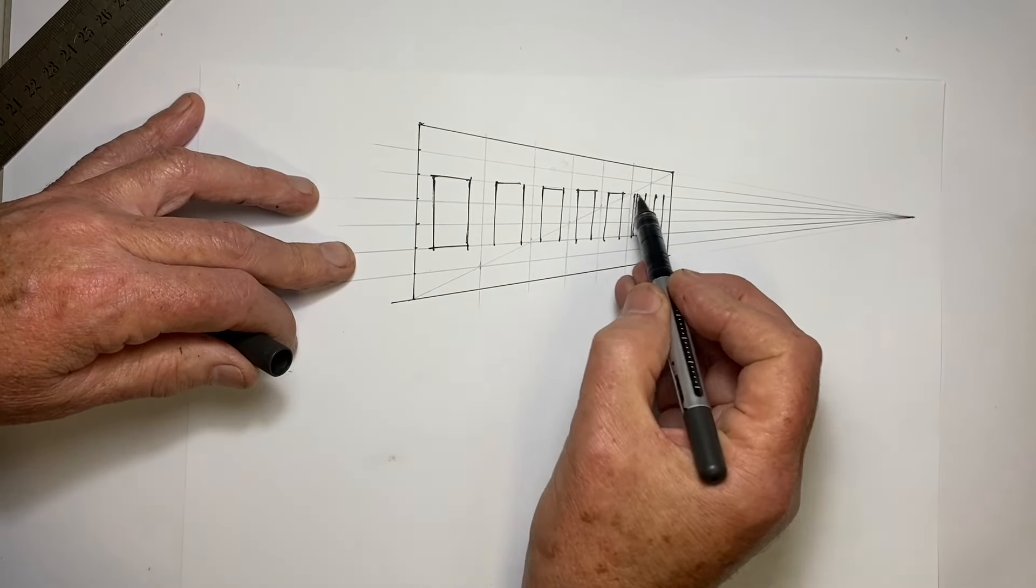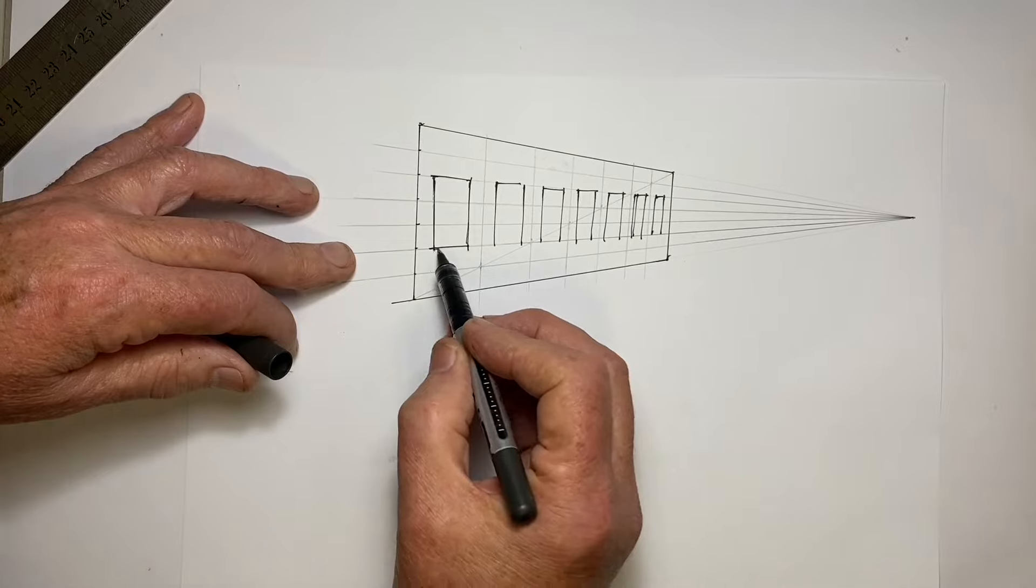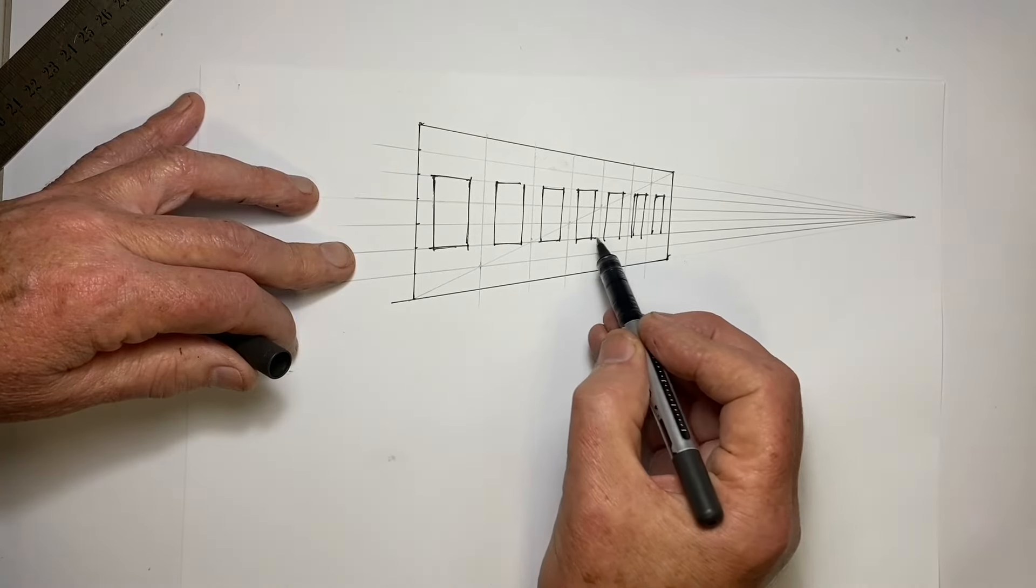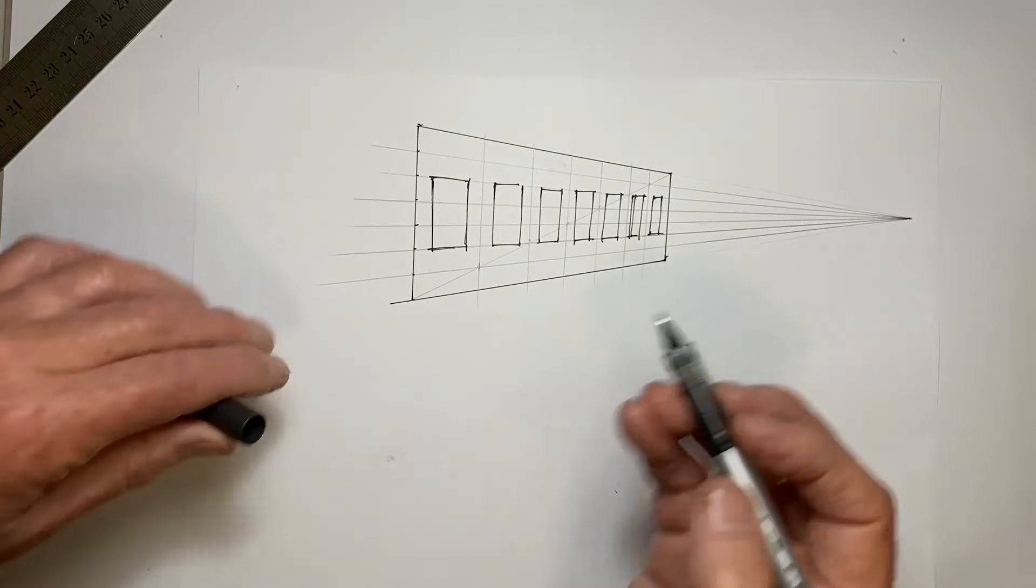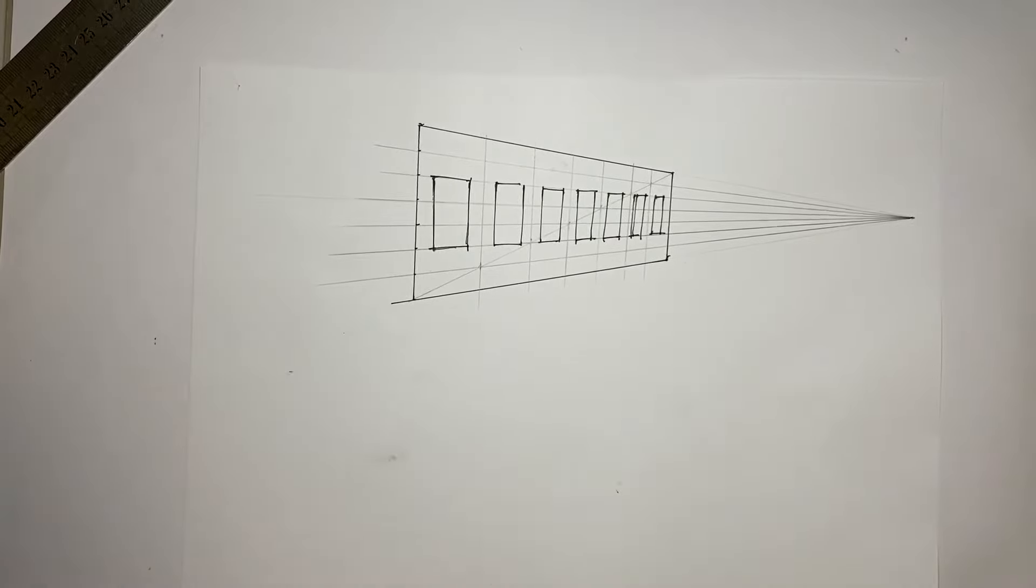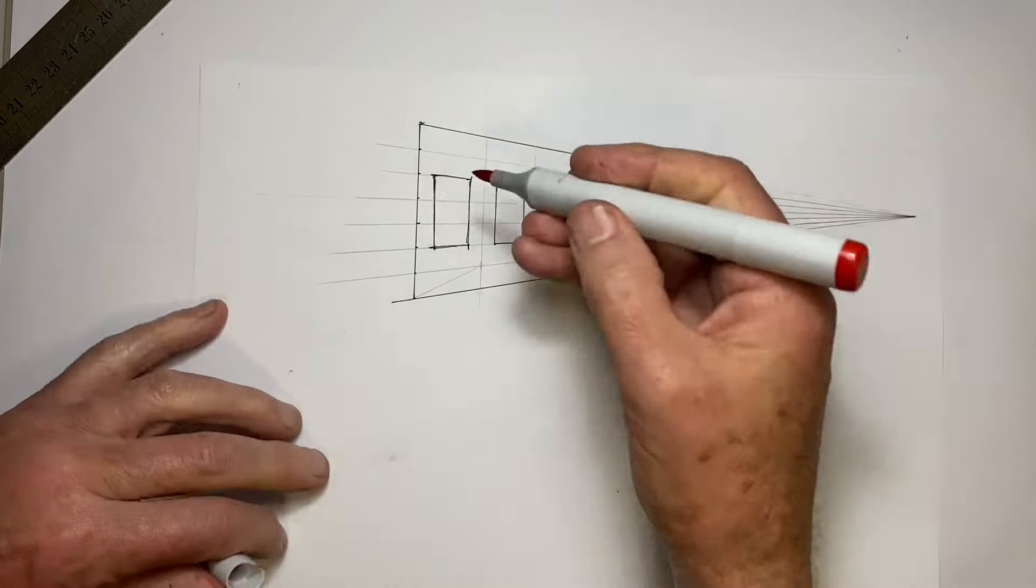It's not just the windows that become narrower, but the gaps between them become narrower as well. So now I have seven windows, but this looks a lot more correct, doesn't it?